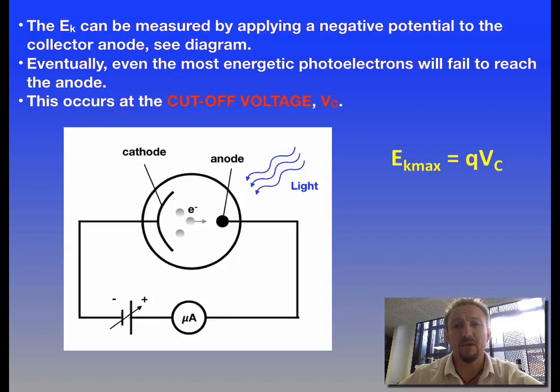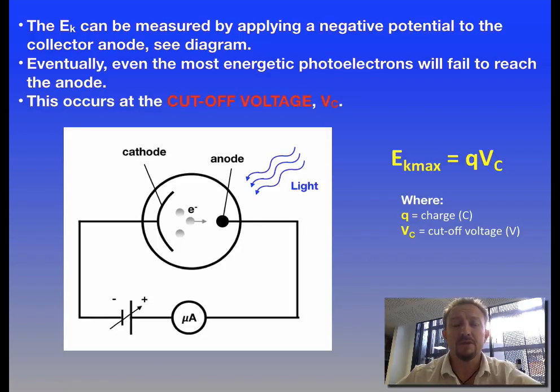If we look at q, q is measured in coulombs and we know that voltage is measured in volts which is joules per coulomb. So basically what we get is coulombs times joules over coulombs, the two coulombs cancel out and hence we're left with the units joules which is the kinetic energy unit.